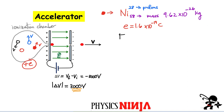This potential difference produces an electric field between the plates pointing from positive to negative. There is a force on the charge equal to the magnitude of the charge multiplied by the electric field magnitude, which accelerates the nickel atom. In terms of energy, we convert electrical potential energy into kinetic energy. We use conservation of energy to calculate the exit speed, assuming the initial velocity is small.